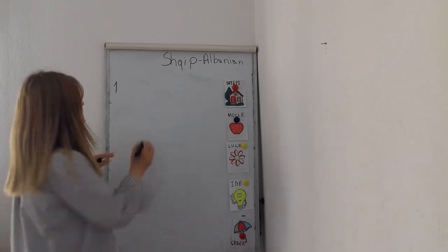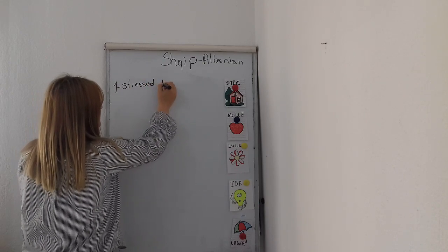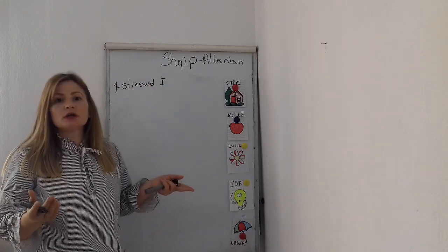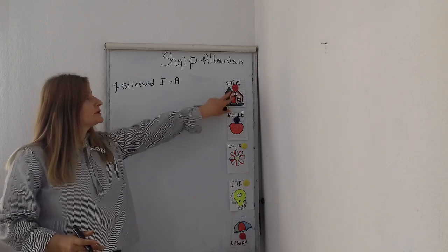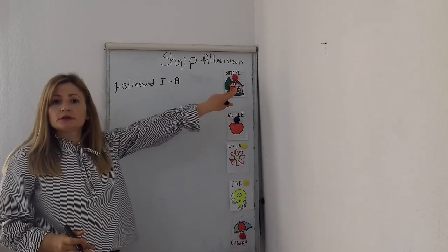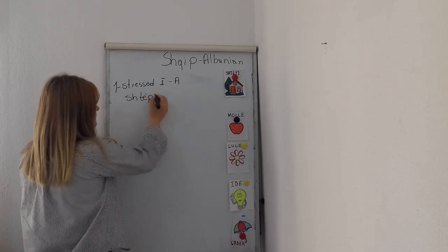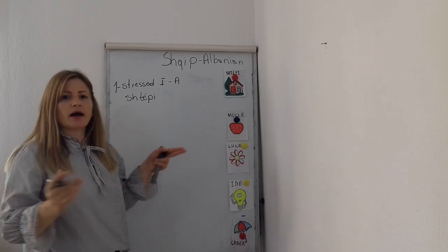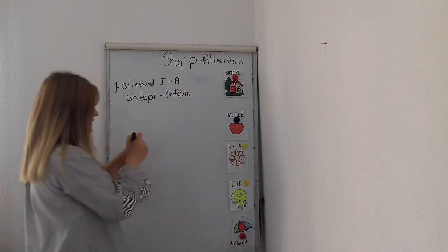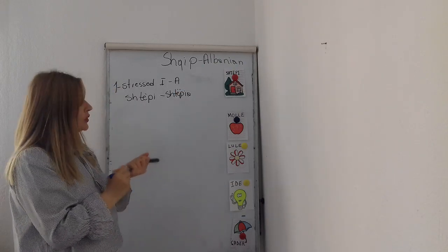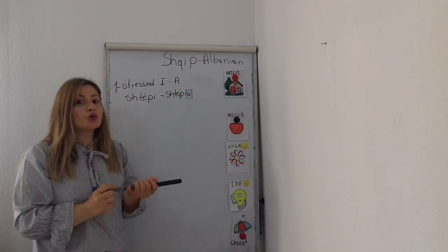The first rule: if the noun ends in a stressed I, to make the definite form, we add A. For example, 'Shtëpi' — Shtëpi means 'a house.' We add A: 'Shtëpia' — the house. Or 'Kuti' — Kuti means 'a box' — becomes 'Kutia.'